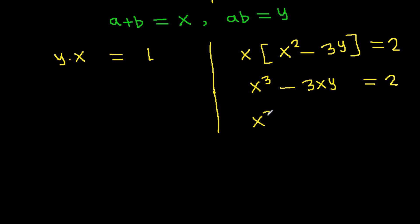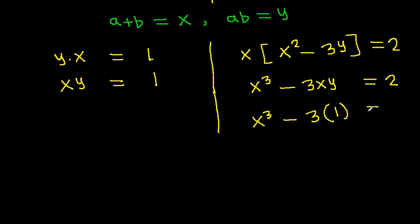We have x cubed minus 3 times xy equals 2. Since xy equals 1, this becomes x cubed minus 3 equals 2. So x cubed equals 2 plus 3, which is 5.